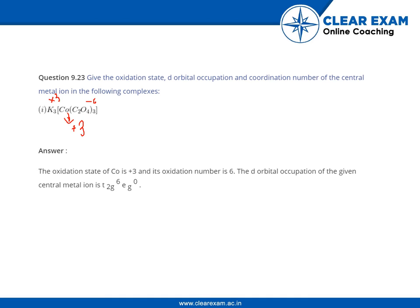Actually, it is given wrong - it will be coordination number, not oxidation number. Write it here: coordination. The coordination number is 6. The d-orbital occupation of the given central atom is T2G6 EG0. How?